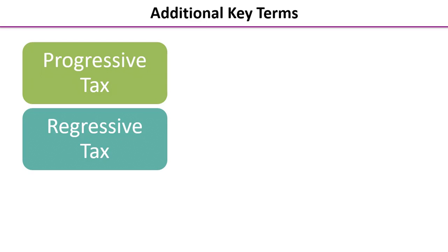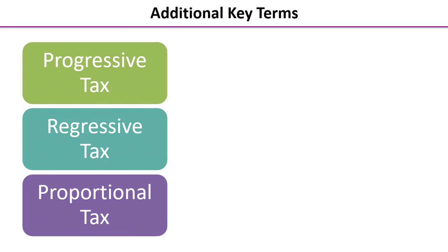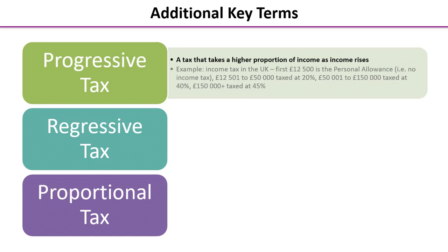We're going to look at three terms: progressive tax, regressive tax, and proportional tax. A progressive tax is one that takes a higher proportion of income as income rises. We have an example there about UK income tax — you might just want to take the time to pause and read through the detail. Remember, examples and evidence are really important in your A-level economics exams.